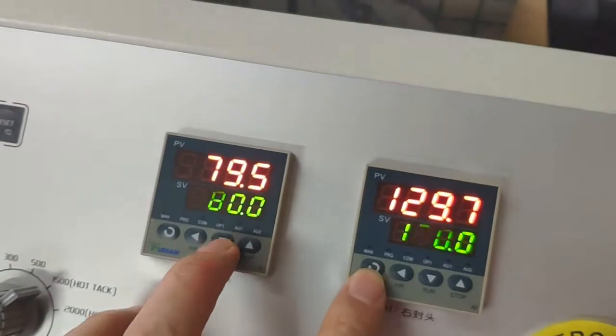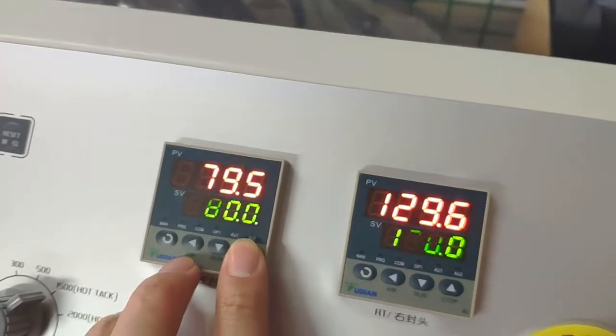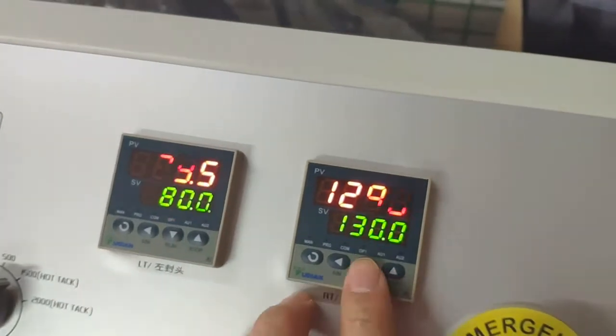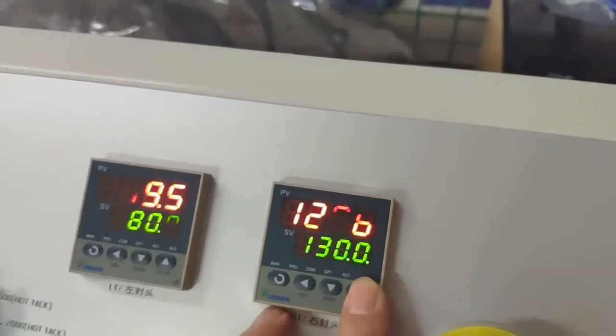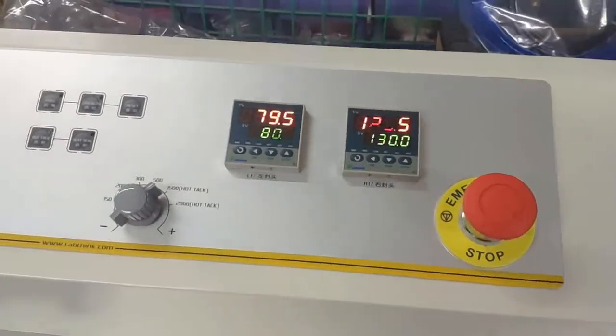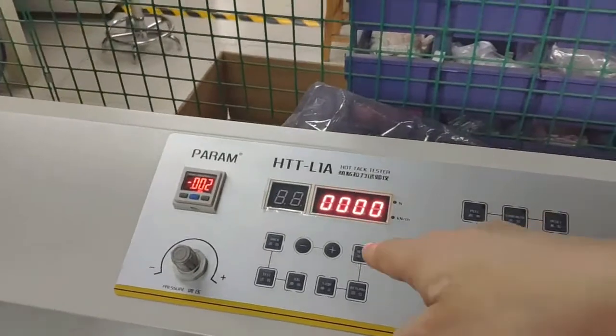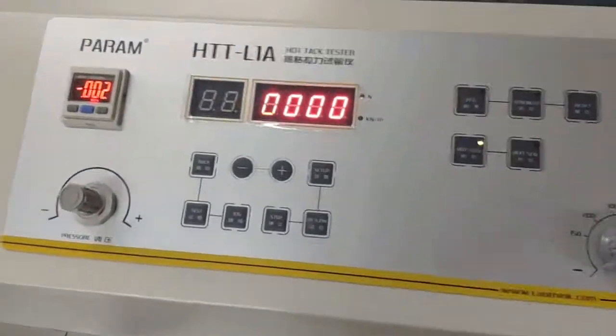These two controllers are very easy to operate. Use these two buttons to decrease and increase the values. Adjust them to the required values. This is the operation for temperature. Now for the operation of the test parameters.